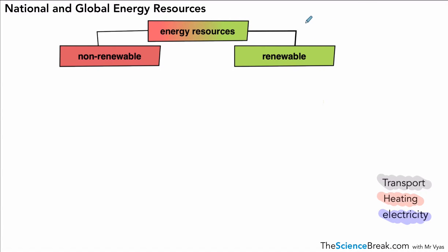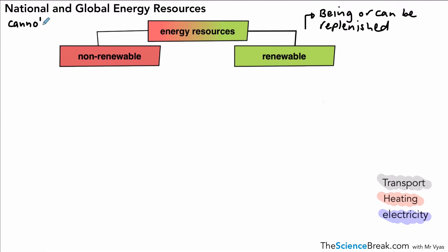What do we mean by renewable energy resources? Basically our renewable energy resources are being replenished, or can be replenished — we could say they don't run out. In terms of our non-renewable energy resources, these are ones that once they have been used they cannot be replaced, which means they are going to run out. The more we use them the faster they will run out.